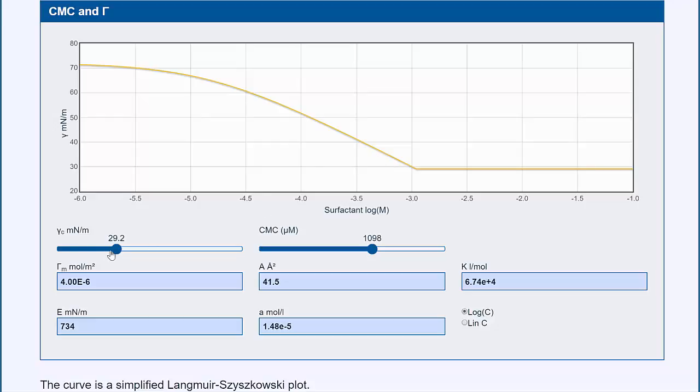The other input is gamma C, which is the equilibrium surface tension. So now it's 21 at equilibrium, and now it's 28 at equilibrium. And by changing gamma C, you change two things.